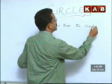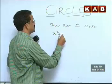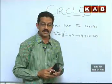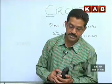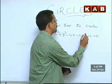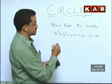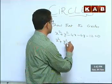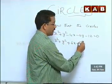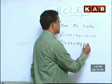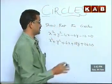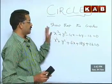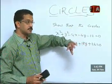Show that the circles x² + y² − 4x − 6y − 12 = 0 and x² + y² + 6x + 18y + 26 = 0 — these are the two circle equations. The questions are a little bit challenging, but even so they are important. The question gives two circles and asks you to work with their relative position.